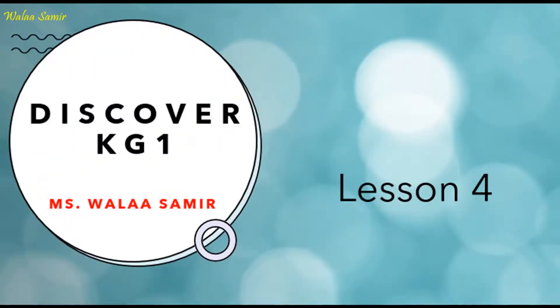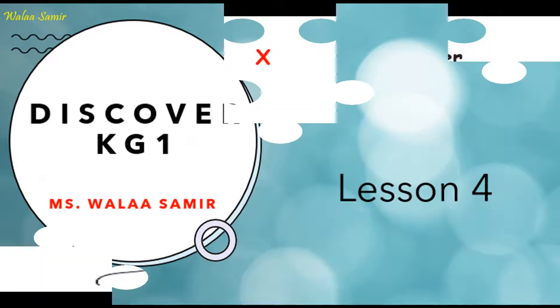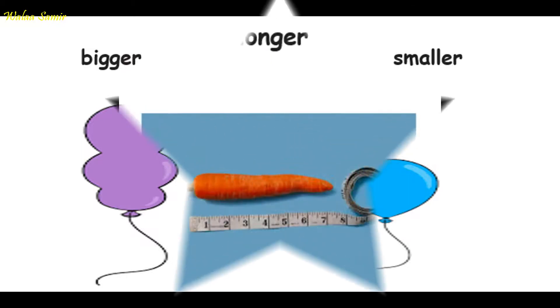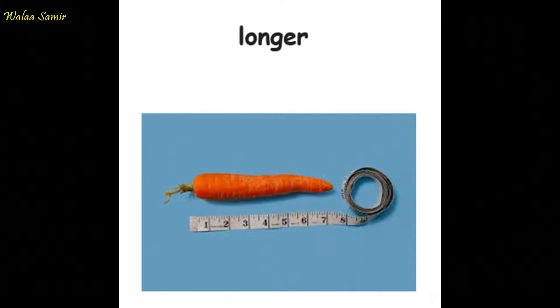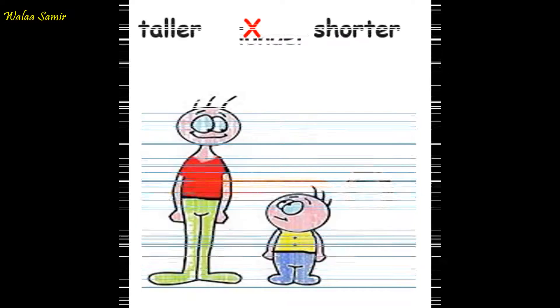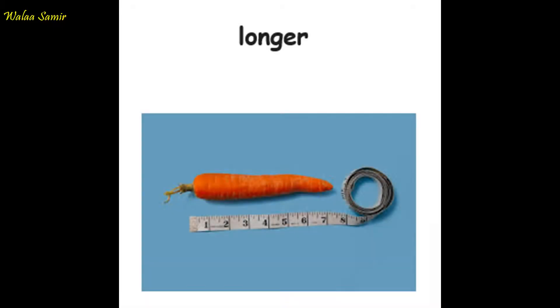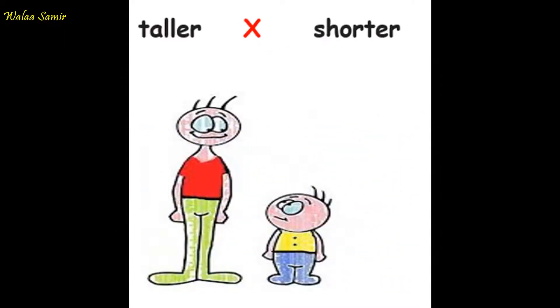Now it's time for Listen 4 words. Bigger, and the opposite is smaller. Here we're talking about the sizes. Longer, taller, and the opposite is shorter. As you can see, longer is used horizontally while taller is used vertically.